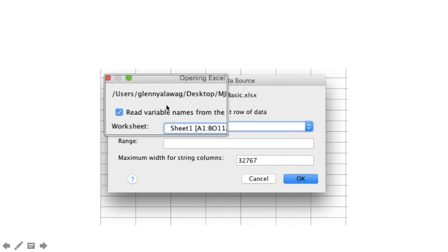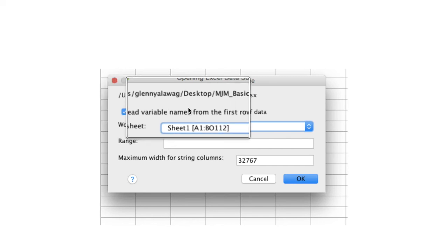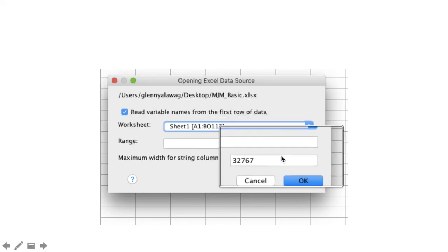In the next dialog box, make sure that this box is checked because we know that the first row of our Excel file refers to the variable names. Also select the appropriate spreadsheet and then click OK.